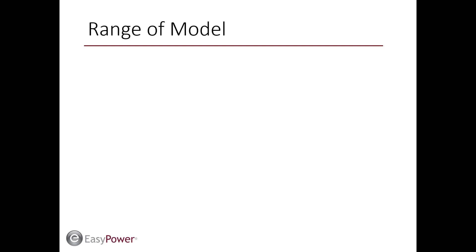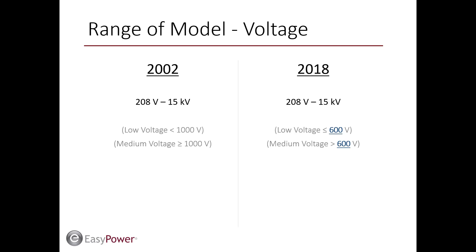Range of model: the IEEE 1584 arc flash model is an empirically derived model based on data observed during testing. Due to testing limitations, data is only available for certain system parameters, which define the range of model. Similar to 2002, the 2018 model is only considered to yield consistent results within the recommended range of parameters. The supported range of voltage remains unchanged at 208 volts through 15,000 volts. However, the threshold between low voltage and medium voltage has changed from 1,000 volts to 600 volts, which will have an effect during the calculation process.